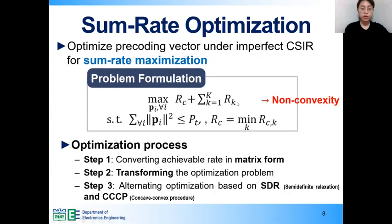Main focus of this paper is to optimize precoding vectors for maximizing the sum-rate of RSMA under imperfect CSIR and CSIT. The problem has non-convexity since the derived achievable rate has non-convexity. Therefore, since the problem is difficult to solve, we solve the problem through the following optimization step.